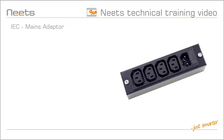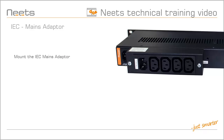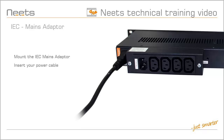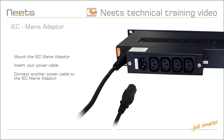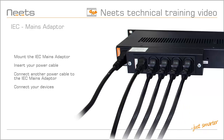The optional IEC mains adapter makes it easy to forward power to other products in a rack cabinet. First you need to mount the adapter on the back side. Then plug in your power cable, and take a power cable from one of your rack devices and plug it into the adapter. Then you can connect rack devices to each output on the adapter.